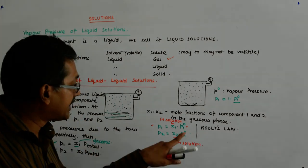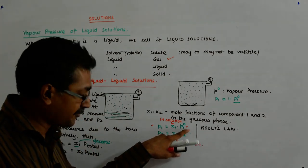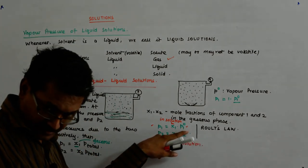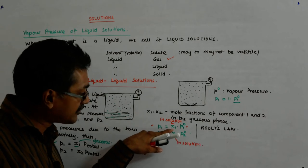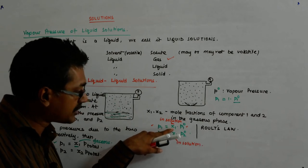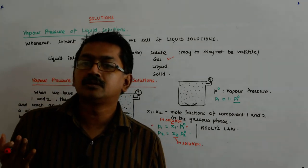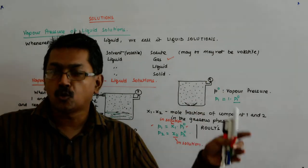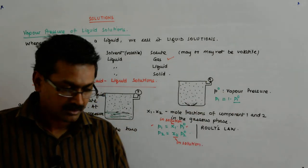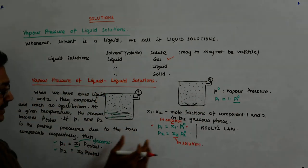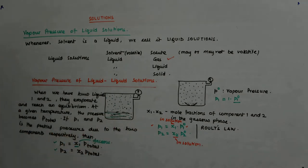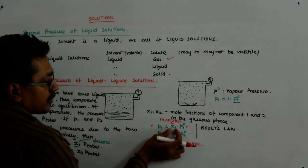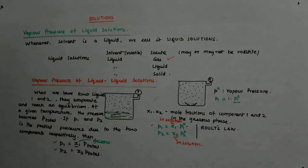By knowing the vapor pressure of the pure substance and knowing its mole fraction in the solution, I am able to tell you its contribution to the total pressure. So there is an x1 here — this x1 is in solution, and this x1 is in the gaseous phase. Do not intermingle these two equations.